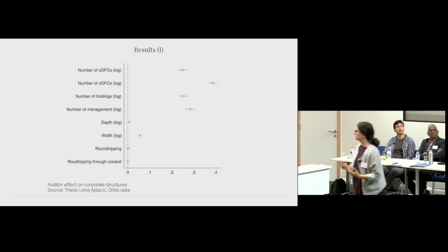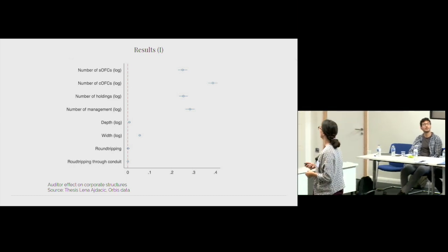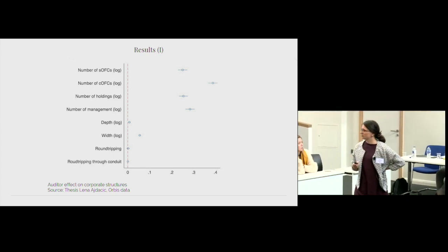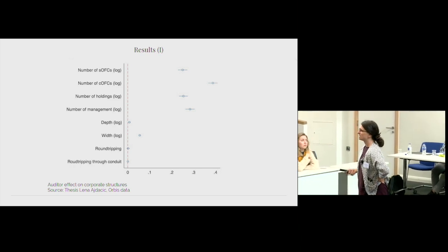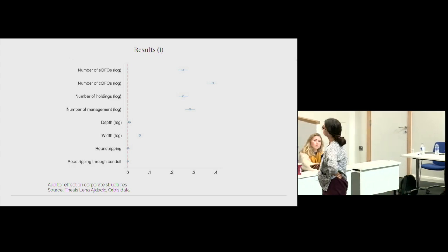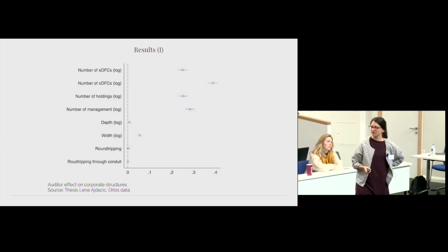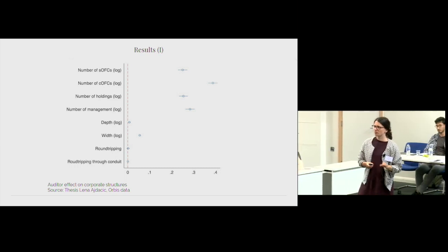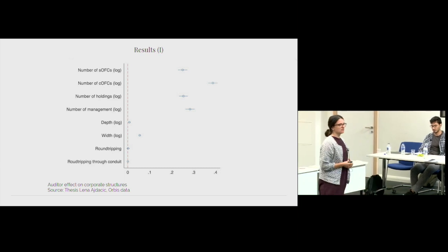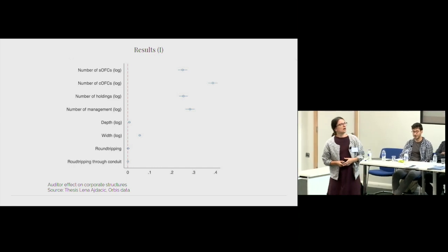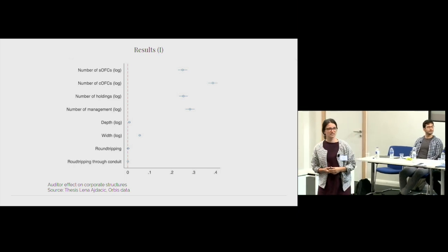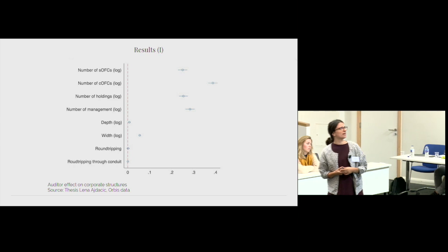To give you some interpretable information, companies which have a big four auditor have 12% more companies in sink offshore financial centers. They have 67% more companies in conduit offshore financial centers. For those who don't know what sinks are, those are, for example, Bermuda, Cayman Islands. Conduits are Switzerland, the Netherlands, the United Kingdom. They have 17% higher number of holdings and 14% higher number of management companies.